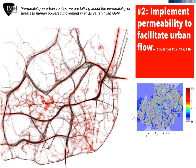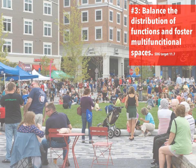Permeability, morphologically speaking, is related to neither motorized nor pedestrian flow modes. Instead, it's correlated with the capacity of the system to permit the movement as a whole.